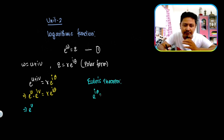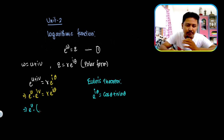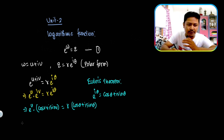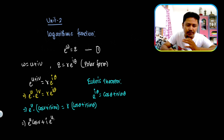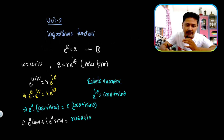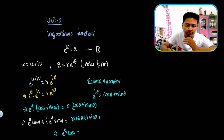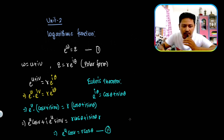We know that e to the power i·theta equals cos theta plus iota sin theta. So e to the power u times e to the power iota·v equals R times (cos theta plus iota sin theta). Expanding the left side: e to the power u times (cos v plus iota sin v) equals R·cos theta plus iota·R·sin theta. Comparing real and imaginary parts: e^u·cos v equals R·cos theta — equation number 2; and e^u·sin v equals R·sin theta — equation number 3.